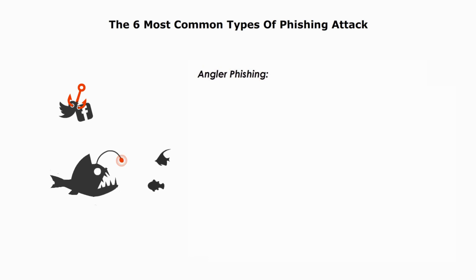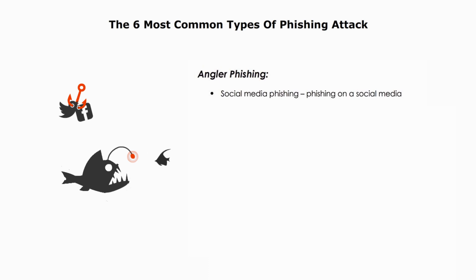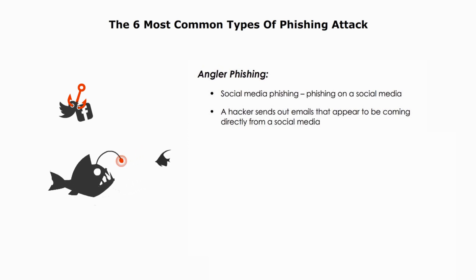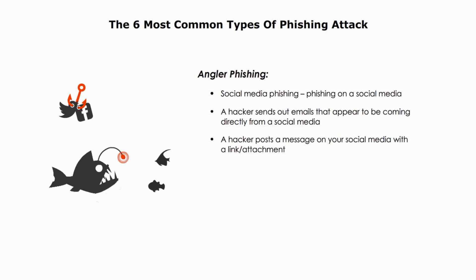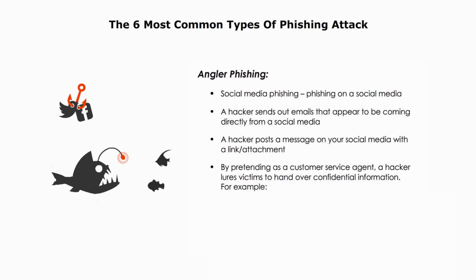Angler phishing is also called social media phishing — phishing on or through social media. Angler phishing comes in different forms. For example, a hacker sends out emails that appear to come directly from social media, or a hacker posts a message on your social media with a link or attachment, or by pretending to be a customer service agent, a hacker lures victims to hand over confidential information.